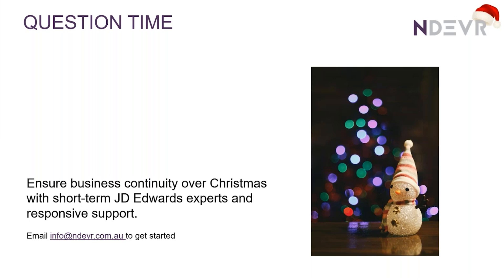One question has come through: apart from order to cash and procure to pay, are there any other enterprise automation models delivered? Not in Release 25, but prior to Release 25 quite a few were already delivered. The two delivered now were specifically order to cash and procure to pay with warehousing. The standard order to cash and procure to pay were delivered in earlier releases, and also requisition to receipts and shipment to dispatch have already been delivered in prior releases. Currently it's just these two new ones that also manage the warehouse.